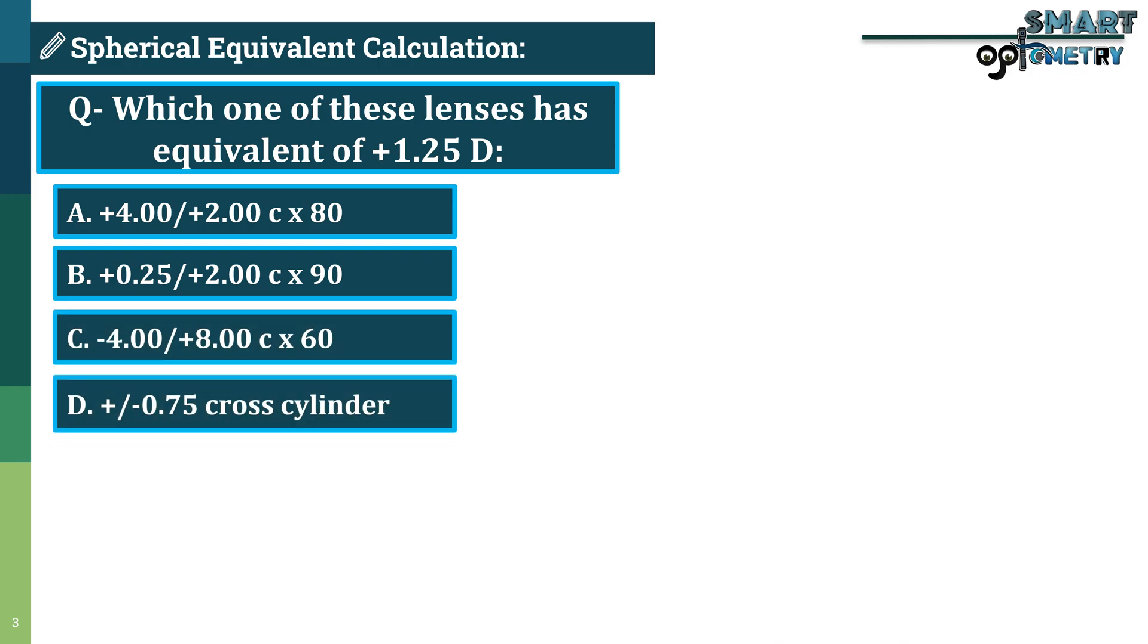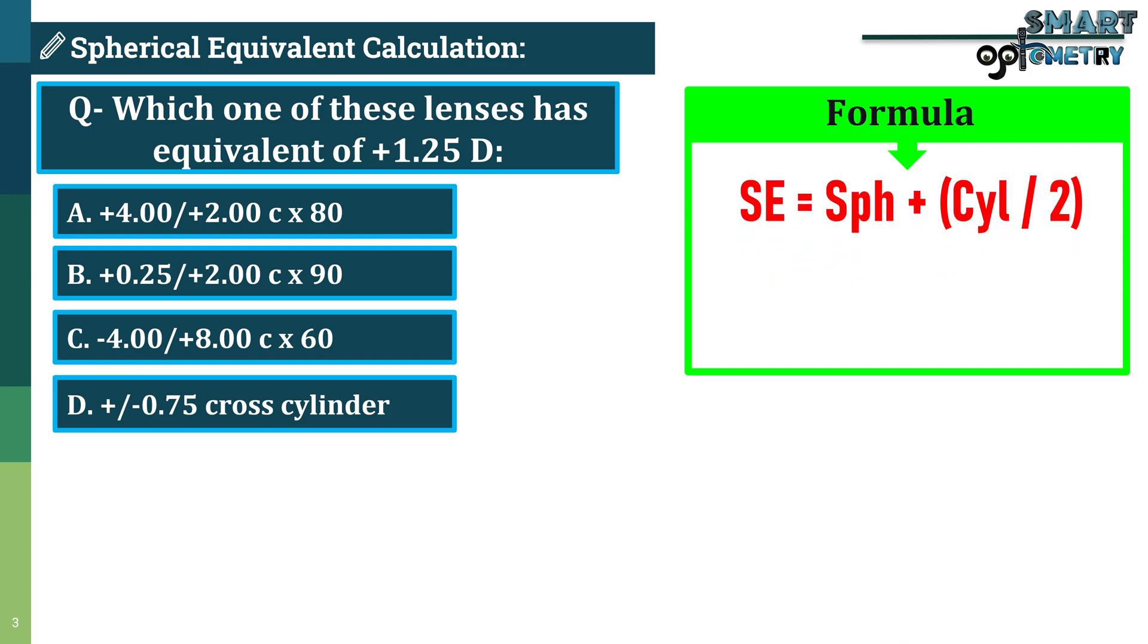To solve this, we need the spherical equivalent formula. The formula is simple. Spherical equivalent equals sphere plus cylinder divided by 2. Basically, you take the cylinder power, divide it by 2, and add it algebraically to the sphere power.